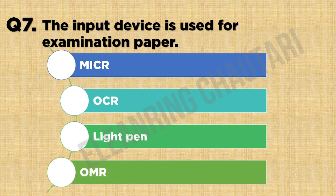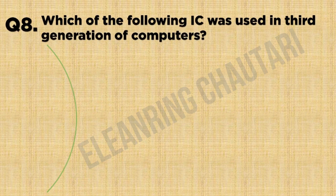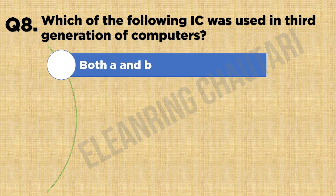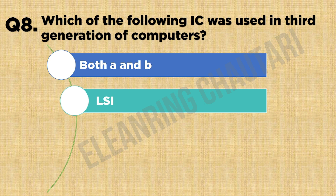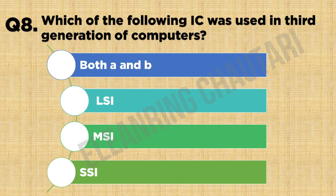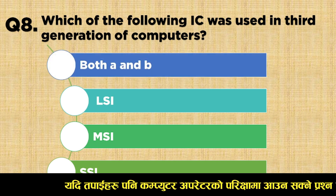Question 8: Which of the following IC was used in the 3rd generation of computers? Option A: both A and B. Option B: LSI. Option C: MSI. Option D: SSI. The correct answer is Option A: both LSI and MSI.